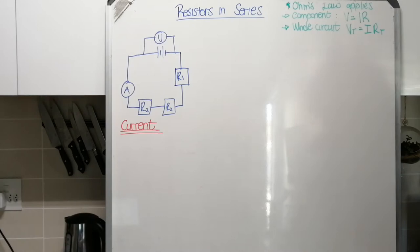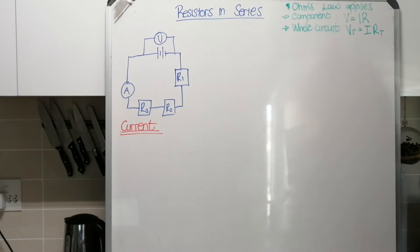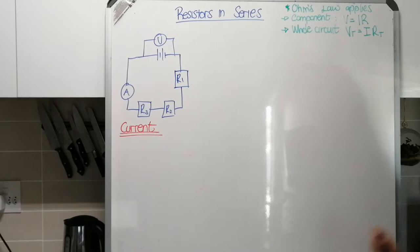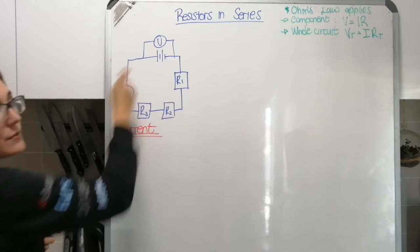If you can't use Ohm's Law, then you need to understand how potential difference, current, and resistance work in a series circuit — or in a parallel circuit, which we'll look at tomorrow. A series circuit is a circuit in which the current does not split. There are no branches; there is a single pathway for your current to take. So the current leaves the battery and goes around the circuit without ever splitting.